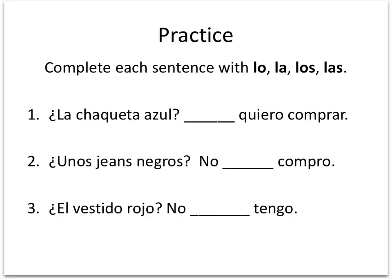Let's get some practice going to make sure we understand. We want to complete each sentence with lo, la, los, or las. Lo and la can mean you in the formal, him or her, or it. Los and las can mean y'all or them. If it's all masculine, you would use los. If it's a mix of masculine and feminine items, you also use los. And if it's all feminine items, you use las.